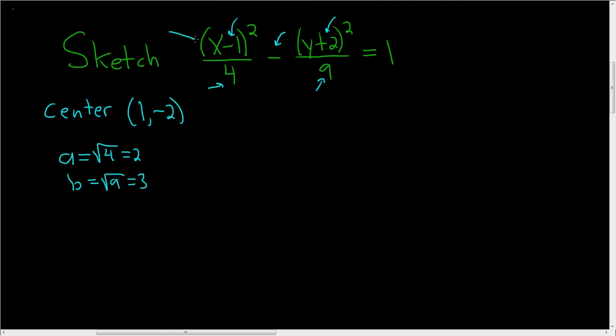The X comes first, so this opens left and right. If the Y had come first, so if we had a Y here instead of an X, it would open up and down. Because it opens left and right, A will tell us how far to go left and right from the center. If it had opened up and down, A would tell us how far to go up and down. So A always tells you how far to go left and right or up and down.